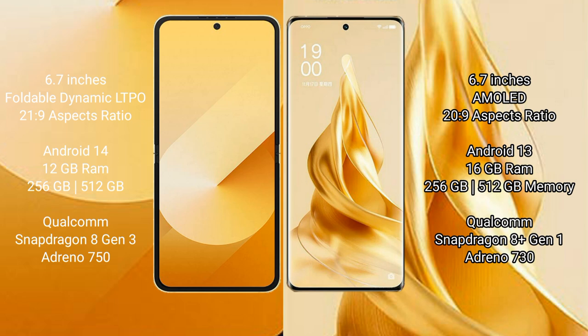Samsung Galaxy Z Flip 6 runs on Android 14, while Oppo Reno 9 Pro Plus runs on Android 13. Samsung Galaxy Z Flip 6 comes with 12GB RAM and 256GB or 512GB internal storage, Qualcomm Snapdragon 8 Gen 3 processor, and Adreno 750 GPU. Oppo Reno 9 Pro Plus comes with 16GB RAM and 256GB or 512GB internal storage, Qualcomm Snapdragon 8 Gen 1 processor, and Adreno 730 GPU.